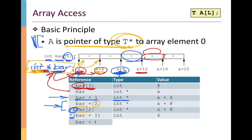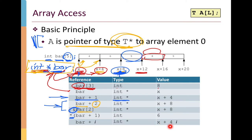In general, bar plus i, for integer i, is going to be an integer pointer. Starting at bar at address x, we add i times the size of each element in the array. So bar plus 1, bar plus 2, bar plus 3 — it refers to the i-th element, or the address of the i-th element. The value is the base pointer x plus the size of each element times i. This is an important expression because we'll be able to use it directly in assembly language to access array contents.